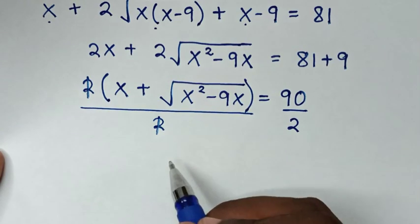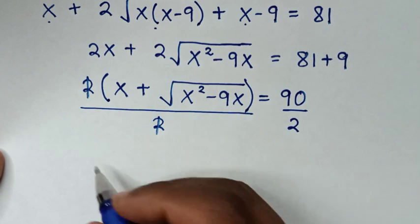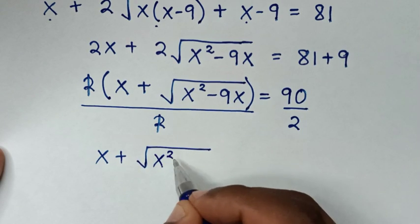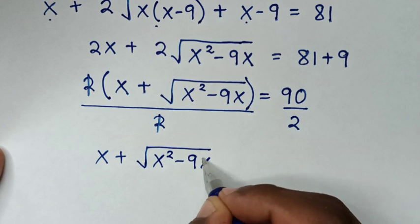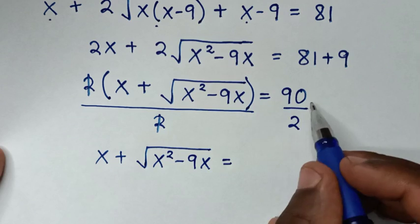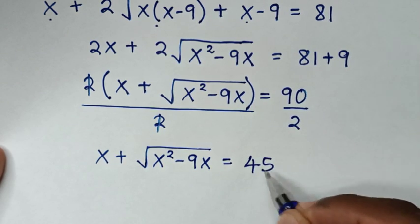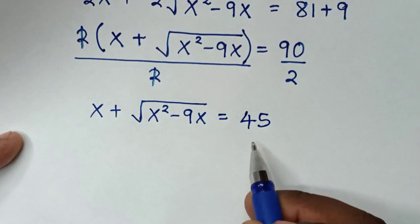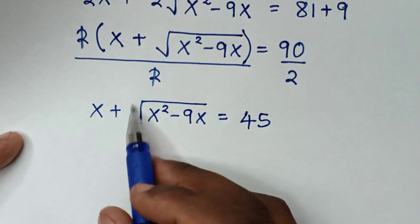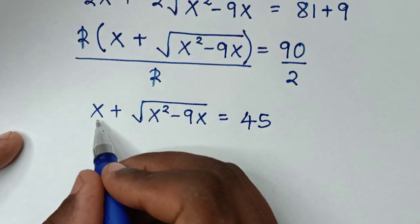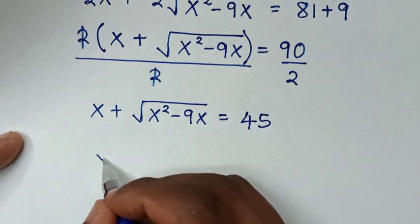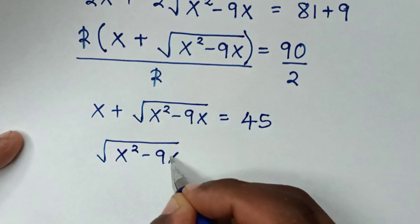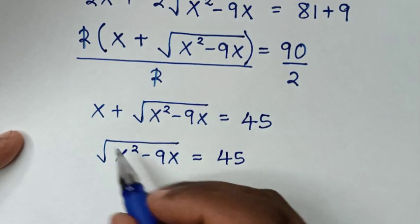We divide by 2 on both sides, so this and this cancel. It becomes x plus square root of x squared minus 9x equals 90 divided by 2, which is 45. We then take x to the other side so we can square both sides. So square root of x squared minus 9x equals 45 minus x.